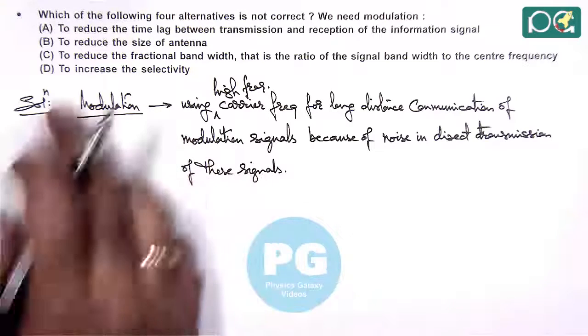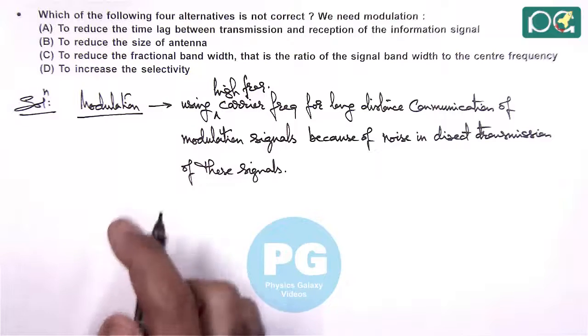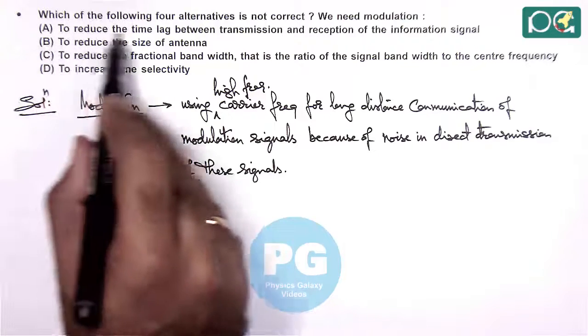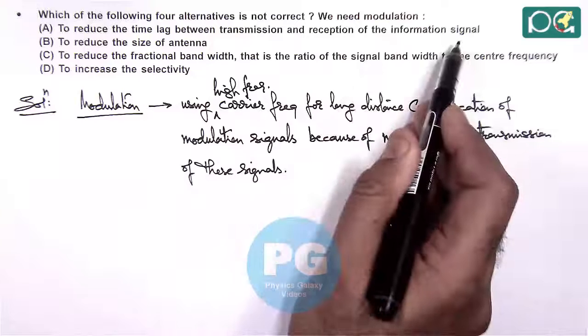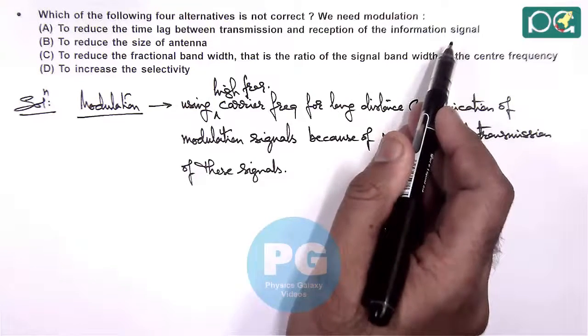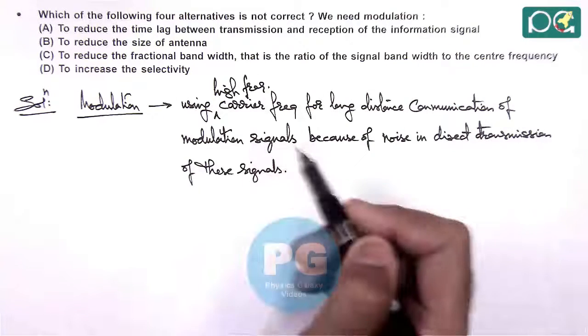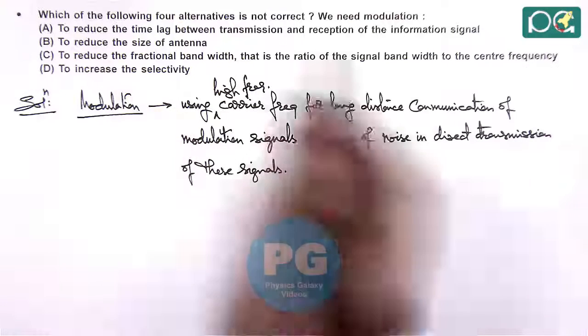Now in this case if we check with the options ABCD, here we can see A says to reduce the time lag between transmission and reception of information signal, which depends on speed of signals which remains same. So option A is wrong here.